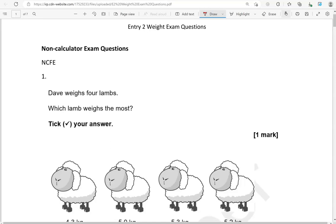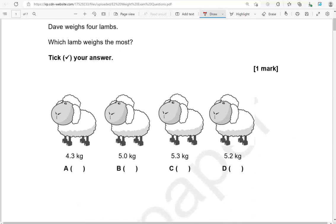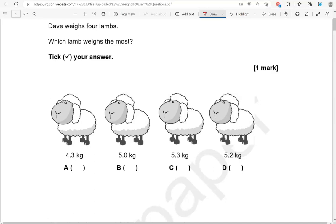Here is the first one. Dave weighs four lambs. Which lamb weighs the most? Tick your answer. We've got lamb A, 4.3 kilograms, lamb B, 5.0 kilograms, lamb C, 5.3 kilograms, and lamb D, 5.2 kilograms. 4.3 kilograms is over 4 kilograms but less than 5. 5.0 kilograms is exactly 5 kilograms. 5.3 kilograms is over 5, more than 5, so far this is the one that weighs the most. And then we've got 5.2. If we compare 5.2 with 5.3, 5.2 is smaller. So the highest of them all is 5.3 kilograms.